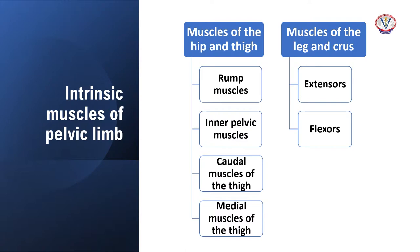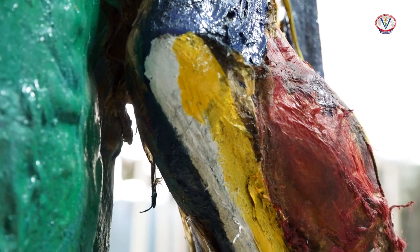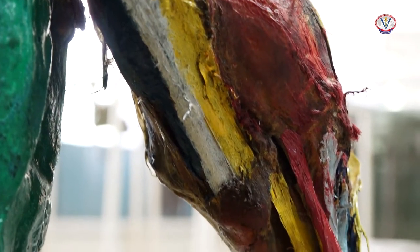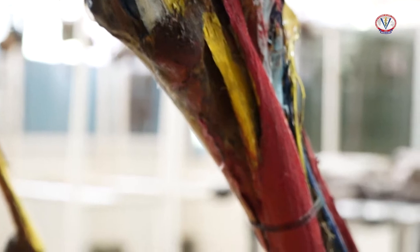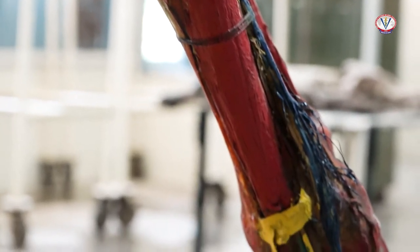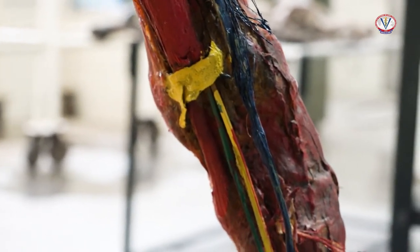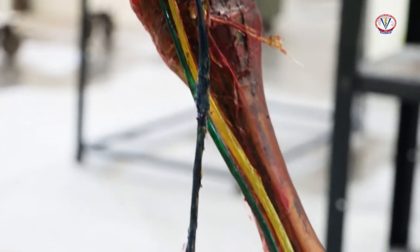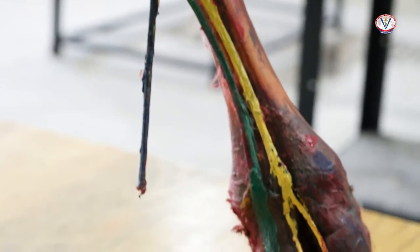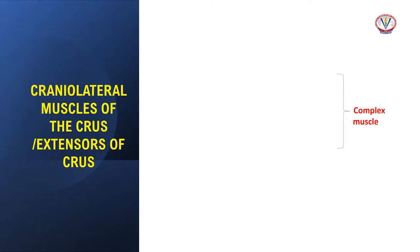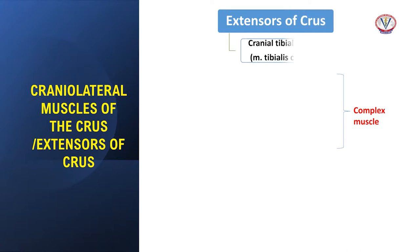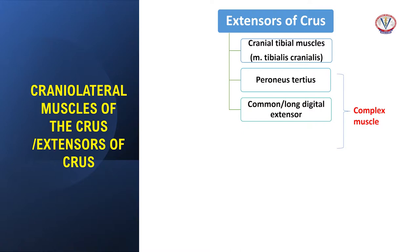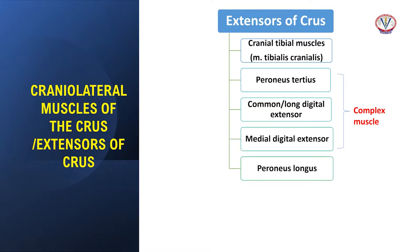The craniolateral aspect of the tibia bears the extensors, and the caudal aspect bears the flexors. The craniolateral muscles of the leg and crus are the extensors, with long fleshy bellies arising from the distal end of the femur or the proximal end of the tibia or fibula. Their tendons of insertion end either on the metatarsus or on the phalanges. The muscles in this group are the cranial tibial muscle, peroneus tertius, common or long digital extensor, medial digital extensor, peroneus longus, and lateral digital extensor.